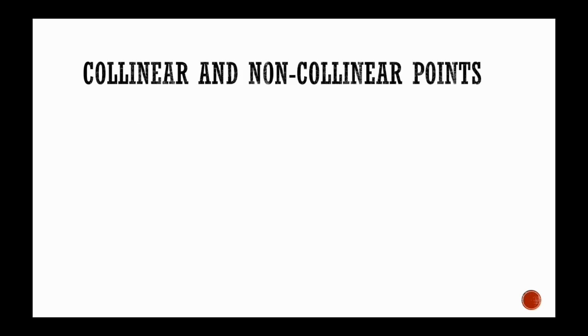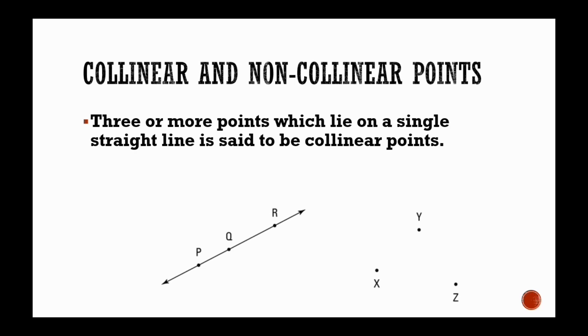Collinear points and non-collinear points. Three or more points which lie on a single straight line is said to be collinear points. In the following figure, point P, point Q and point R lie on a straight line. So, they are called collinear points.